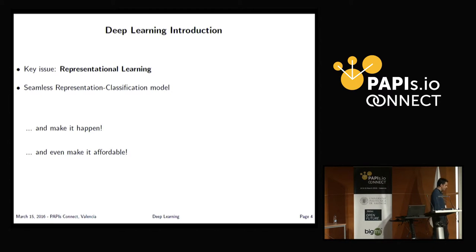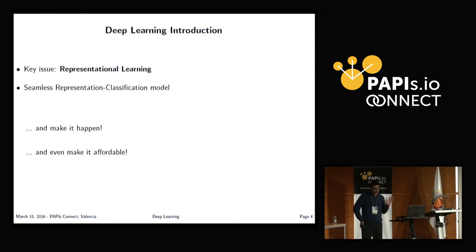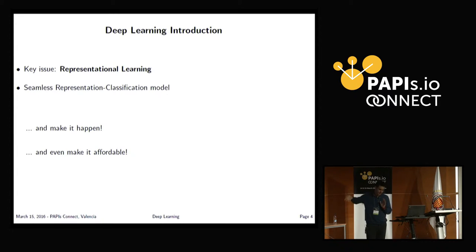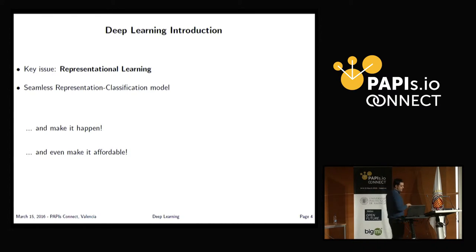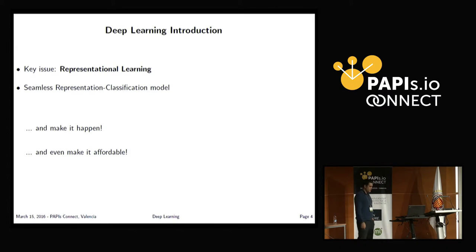The key issue of deep learning is representation learning. Representation learning means that we provide the model with very raw data — for instance, raw speech or just image pixels — and we aim to learn not only the discriminative part of the model, but also how to move from the pixels to an internal representation. In some cases, like convolutional networks for computer vision, there is a clear boundary between representation learning and discriminative learning. We are able to learn these models thanks mainly to the GPU and very large GPU clusters.